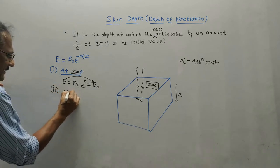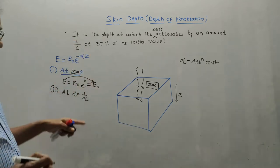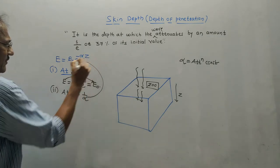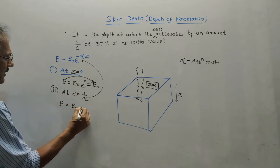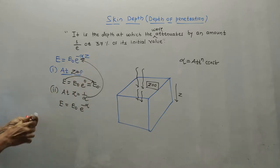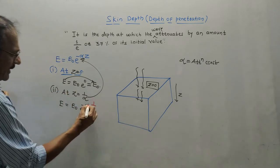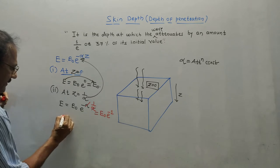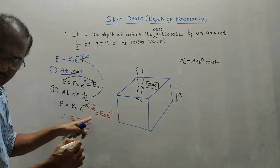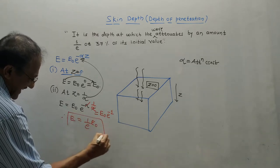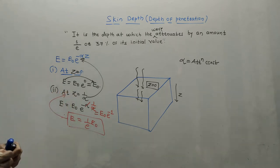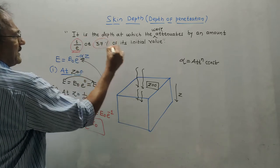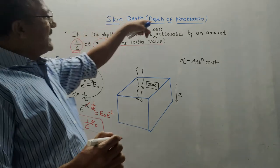Consider the second case at distance z equals 1/alpha. Putting this value into the equation: e equals e0 times e raised to minus alpha times 1/alpha. Alpha cancels, giving e0 times e raised to minus 1, which is e0 divided by e. When the amplitude becomes 1/e or 37% of its initial value, that particular distance is known as the depth of penetration or skin depth.